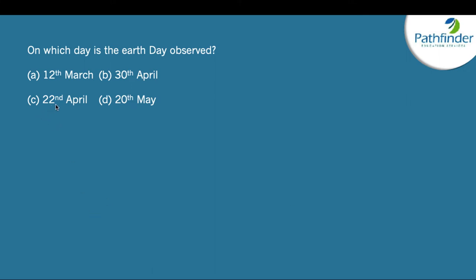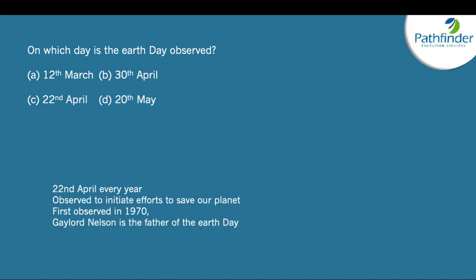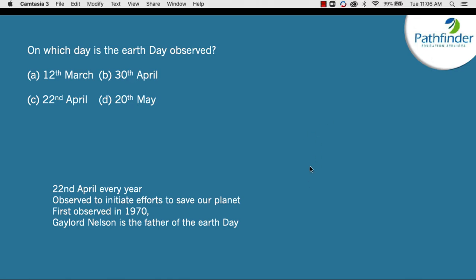On which day is Earth Day observed? The correct answer is 22nd April. It is observed to initiate efforts to save our planet and was observed for the first time in 1970. Gaylord Nelson is considered the father of Earth Day, and the Earth Day 2022 theme is 'Invest in Our Planet.'